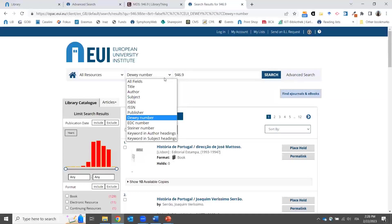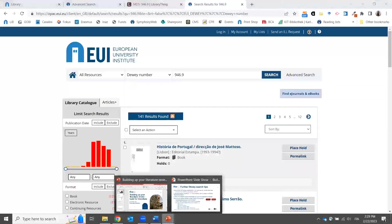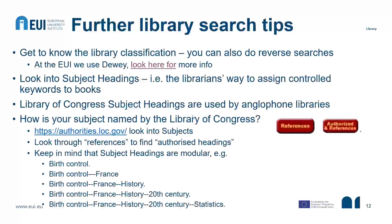I call these 'reverse searches' because we usually look for title or author, but you can do the opposite. It's a nice way to work through the material of a library instead of just looking for keywords and thinking there's nothing there. There might be more if you look a little more carefully.